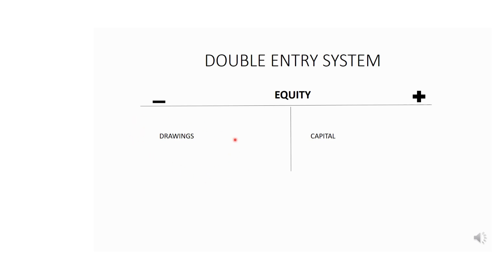Now let us look at the drawings account — also called withdrawals in some textbooks. Drawings refers to a situation where the owner takes an amount of money from the capital contributed for his or her own personal use, or takes trading stock or inventory for personal use. Drawings have a negative effect on your capital or equity.